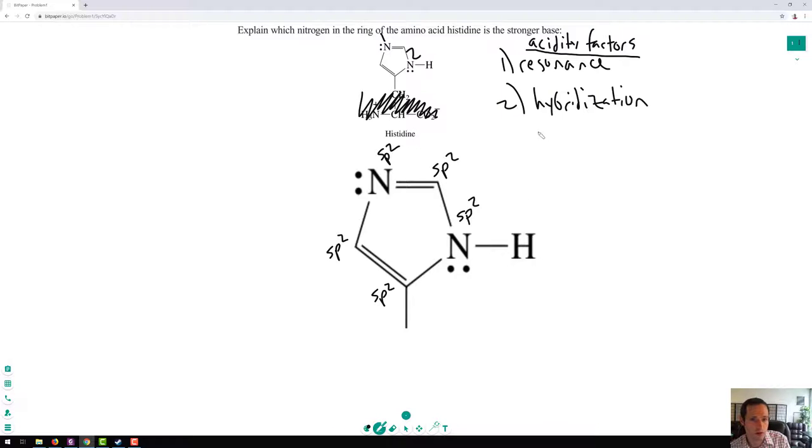Remember what we said about hybridization acidity? sp is most acidic, while sp2 is second most acidic, which is more acidic than sp3. So that doesn't really help us too much. However, this lone pair here is in a different hybridization than this lone pair, and we'll see that in a second.